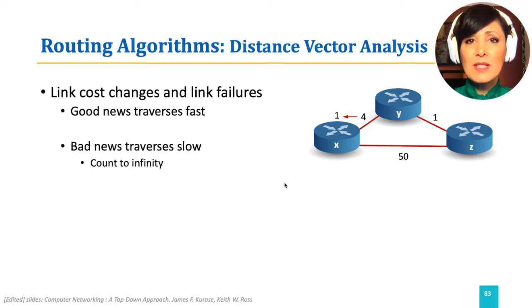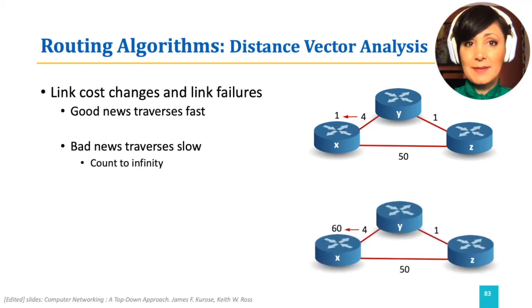However, bad news traverses slow. This might cause a problem that is called count to infinity. For example, if the same value changes from 4 to 60, node Y, receiving this news and having the path costs from X and Z, receives the path costs from Z to X as 5. It does not know that this cost is through itself using the previous link cost that it had. This is because no information other than the cost value is exchanged.